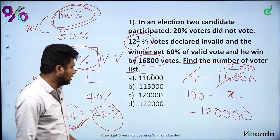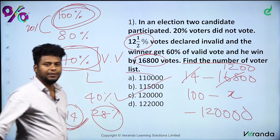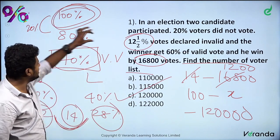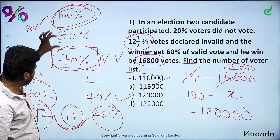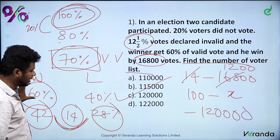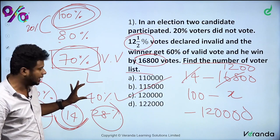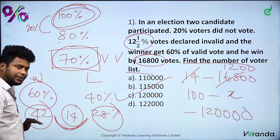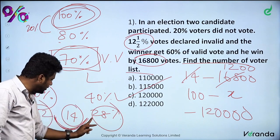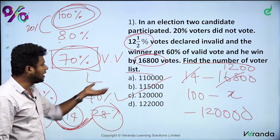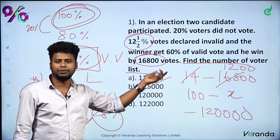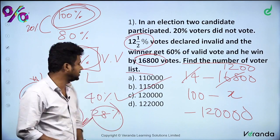The answer is 1,20,000, which is option C. In the logical method: starting with 100, subtract 20%, leaving 80. Of 80, subtract 12.5% (1 by 8), leaving 70% valid votes. The winner takes 60%, the loser 40%. Winner = 42 parts, loser = 28 parts. The difference is 14 parts.